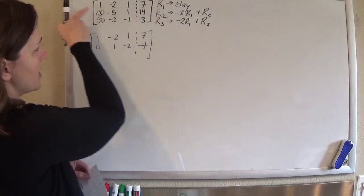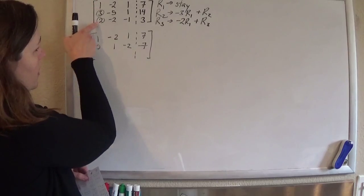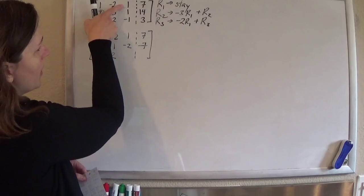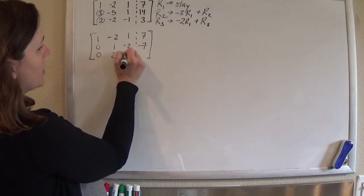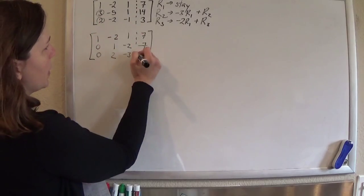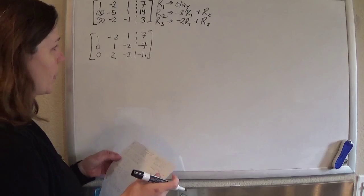Again, using row 1 to make 0's in column 1. So negative 2 plus 2 is 0. 4 minus 2 is 2. Negative 2 minus 1 is negative 3. Negative 14 plus 3 is negative 11. See how I did? Awesome. Alright.